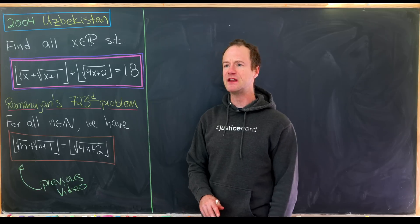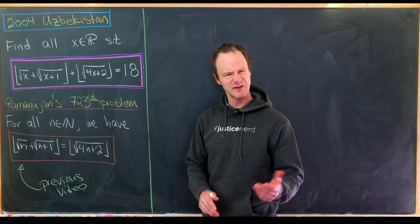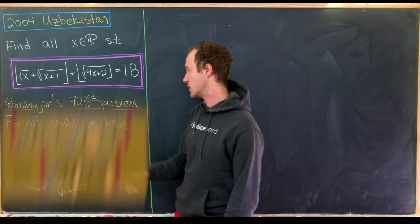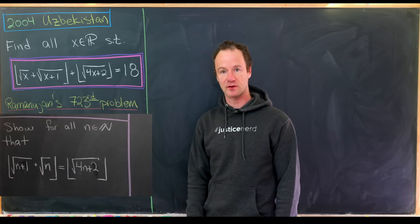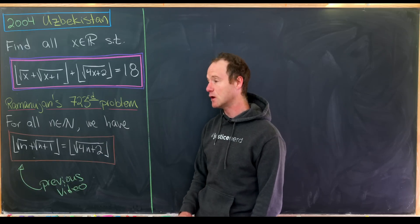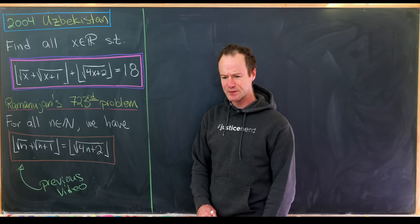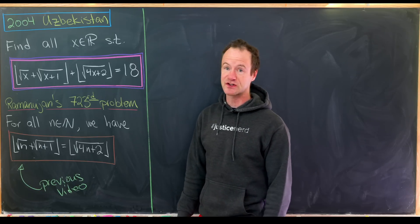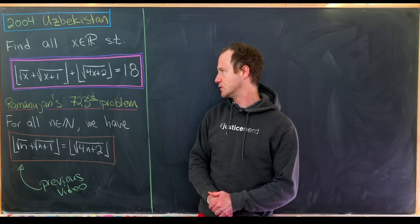That previous video I mentioned is about Ramanujan's 723rd problem, from about a year and a half or two years ago. In that video we showed that for all natural numbers n, there's an equality: the floor of the square root of n plus the square root of n plus 1 is equal to the floor of the square root of 4n plus 2. That actually provides some motivation that when we eventually get a solution, both of these objects will be equal.